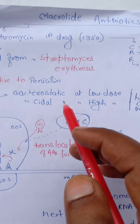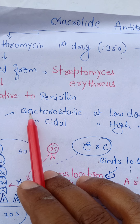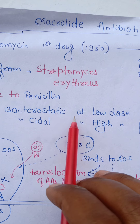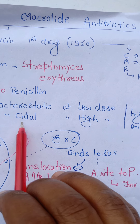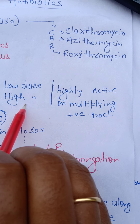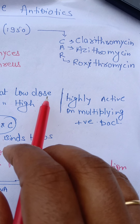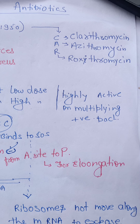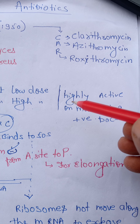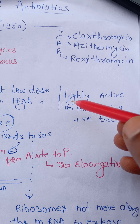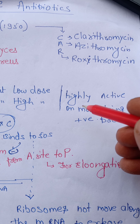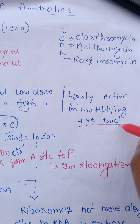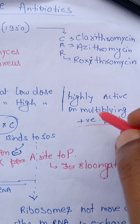Erythromycin is bacteriostatic as well as bactericidal in nature. Bacteriostatic action occurs at low doses, whereas bactericidal action occurs at high doses. It is highly active against gram-positive bacteria and actively multiplying bacteria.